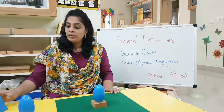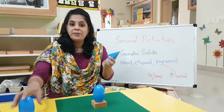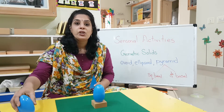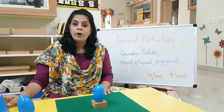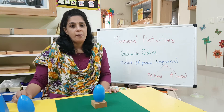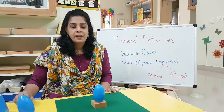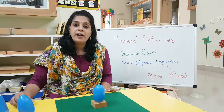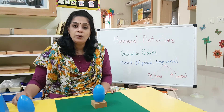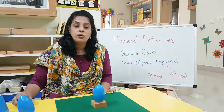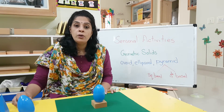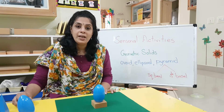Geometric solids are these blue shaped figures that we are learning, right? Cube, cuboid, sphere. You remember all of it? Did you go find out the things that are there in your house in those shapes, like a cube, a cuboid, a cone? Did you check?